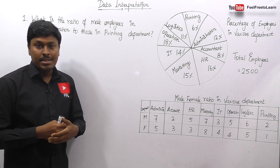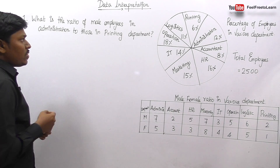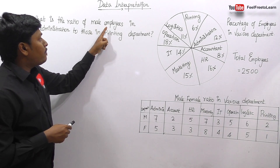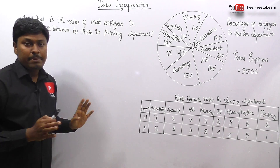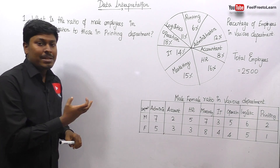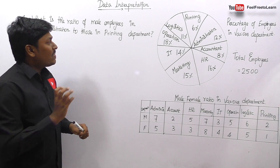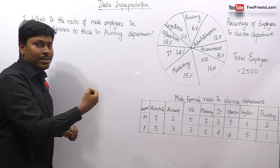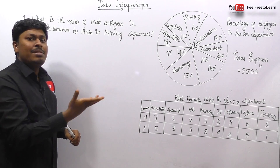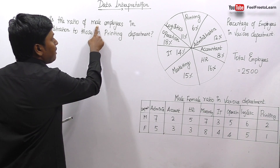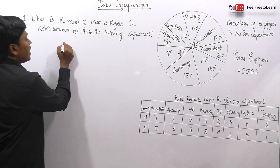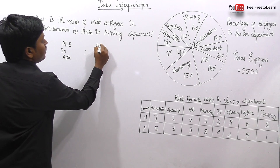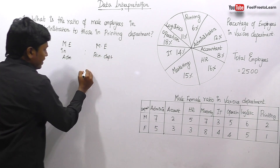Question number one: what is the ratio of male employees in the Administration department to those in the Printing department? We need to find the ratio of male employees in Administration to male employees in Printing. There are many methods to solve these types of questions since it is a basic level question. My advice: to solve faster, don't calculate male employees in Administration and Printing separately and then find the ratio. Write everything in a single step.